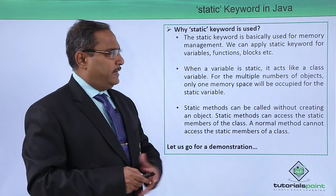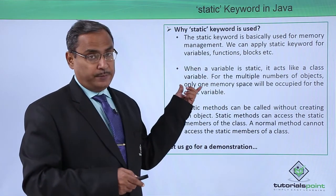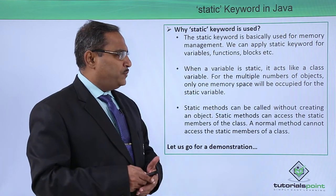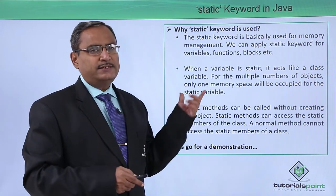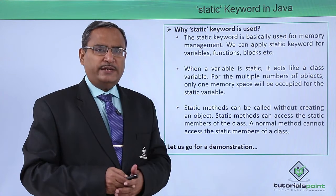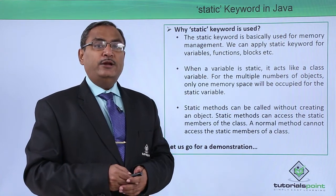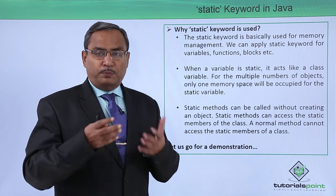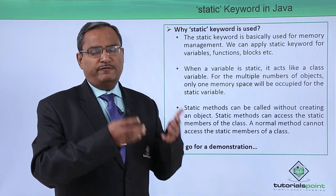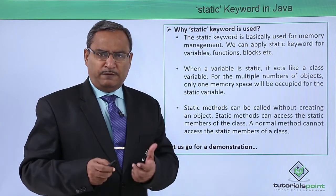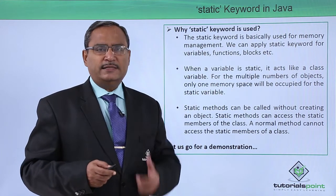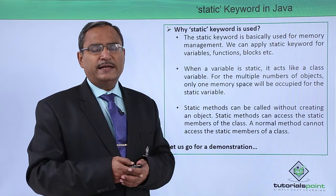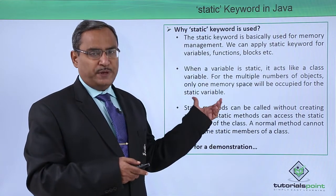When a variable is static, it acts like a class variable. For multiple objects, only one memory space will be occupied against the static variable. When you define one static variable within the class, it becomes a class variable — meaning irrespective of the number of objects created, this static variable will have a single instance in the computer's memory. So it behaves as a class variable, which is a very special feature.